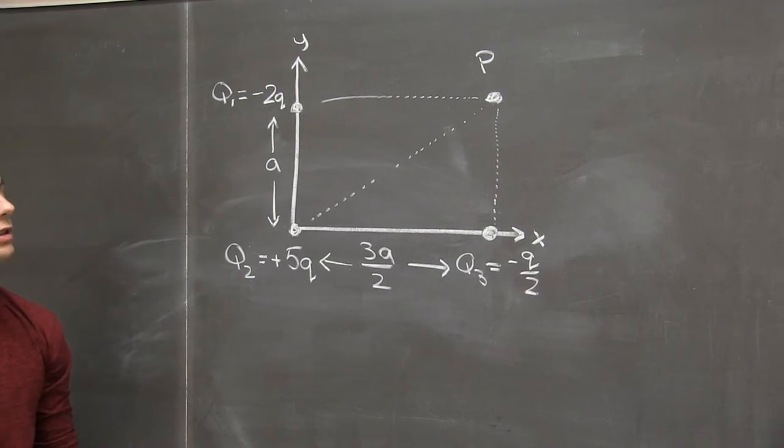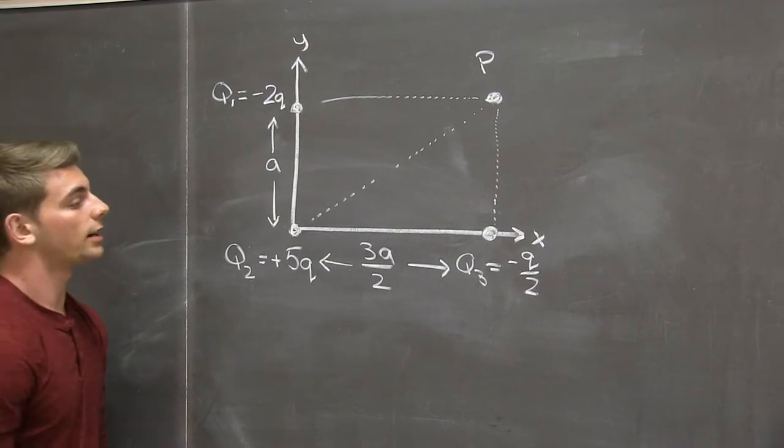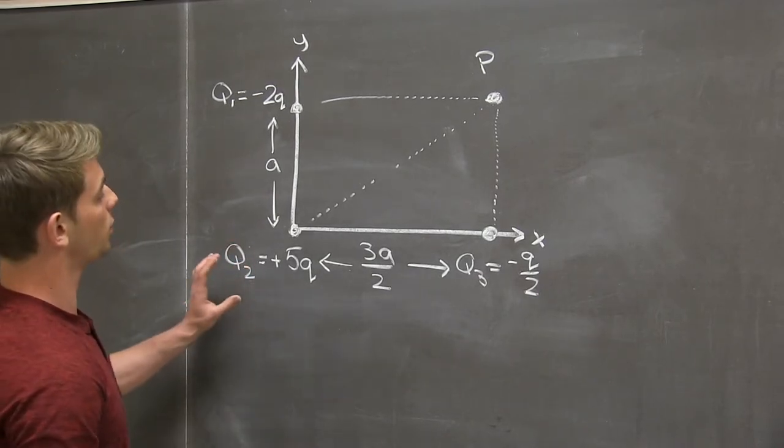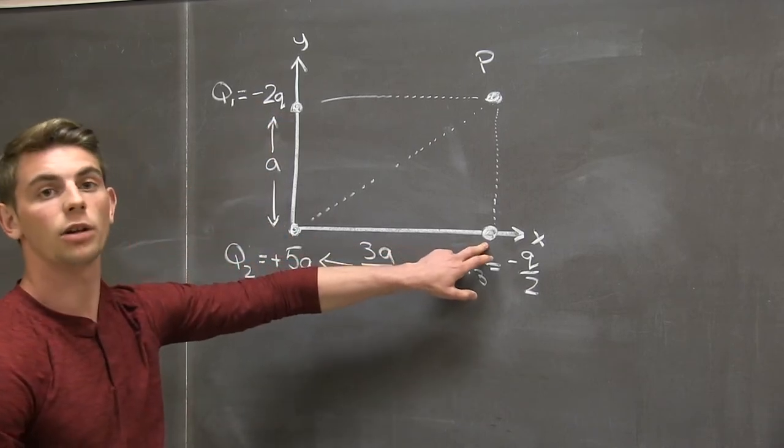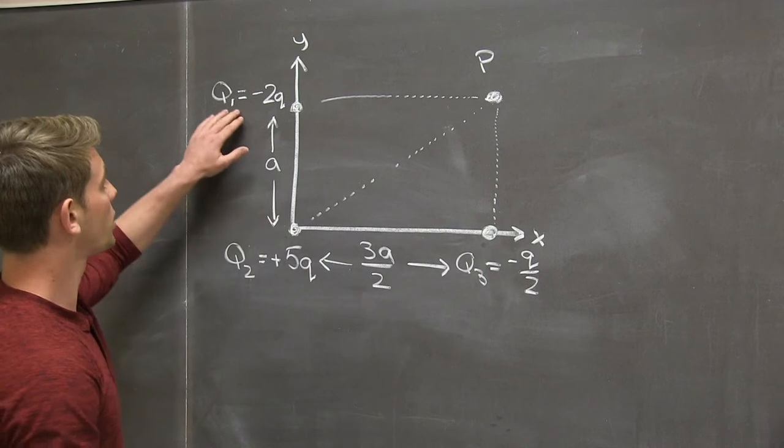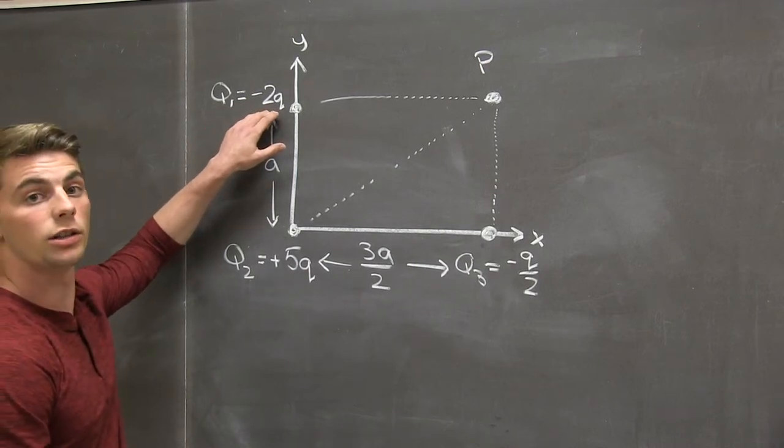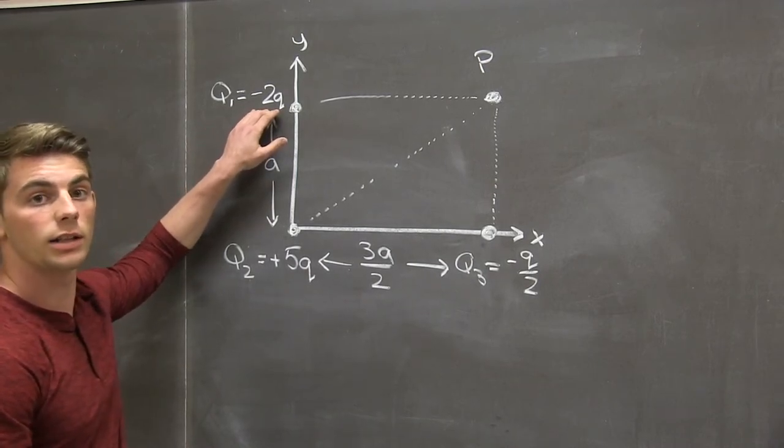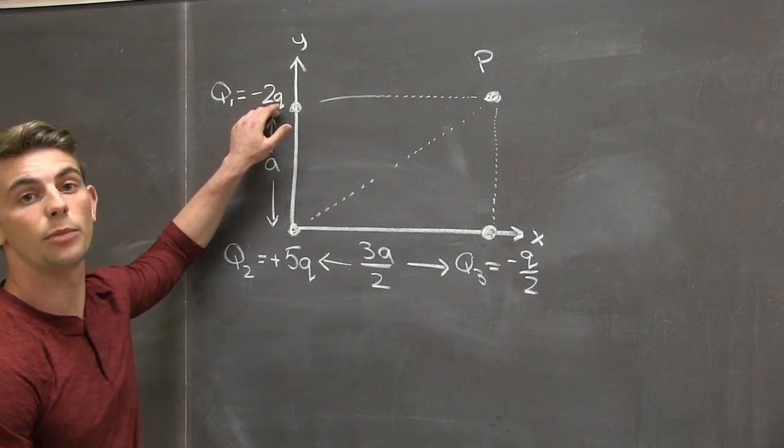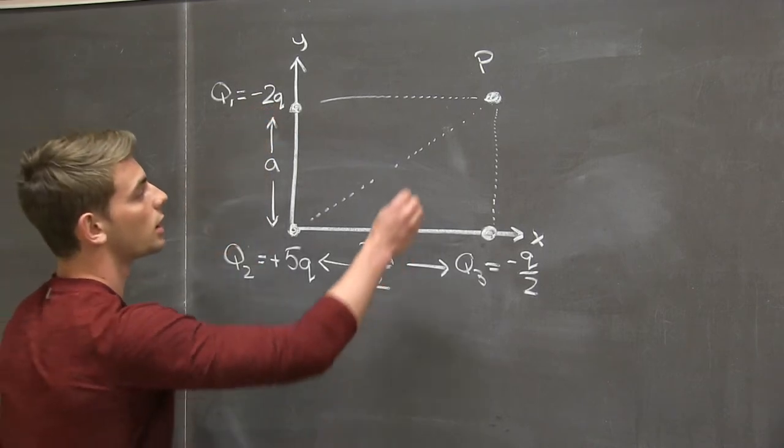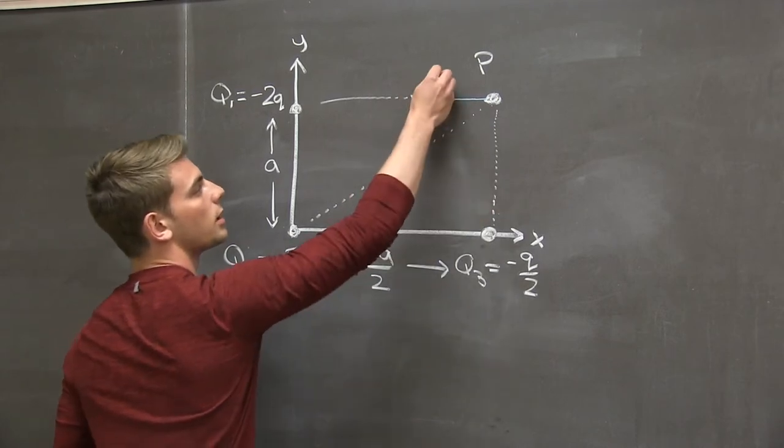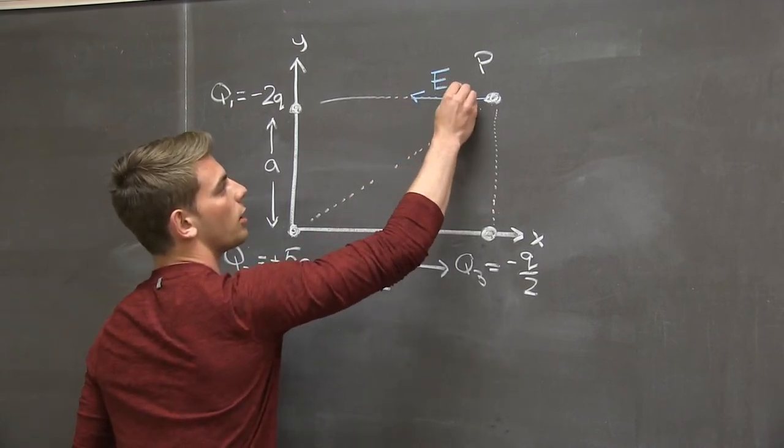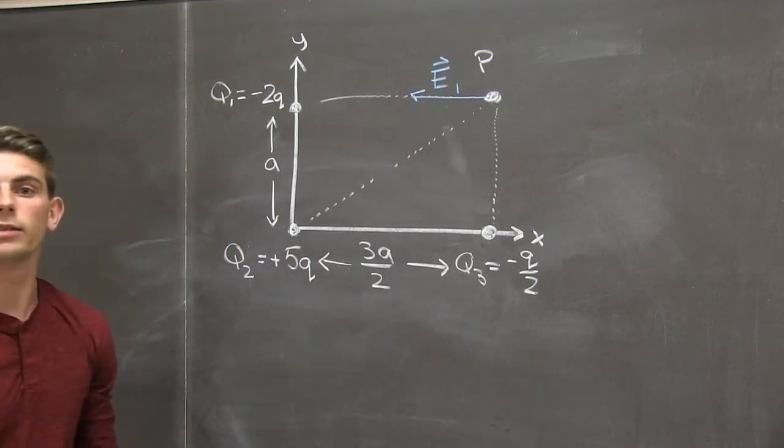Now that we know what this configuration looks like, we need to use our knowledge of electric fields to find out what the overall electric field will be. Each one of these charges has its own contribution. So starting with q1, which has a negative charge, we know that all negative charges have electric field lines that point directly toward the charge. So the electric field due to q1, what I'll call e1, is pointed horizontally to the left.